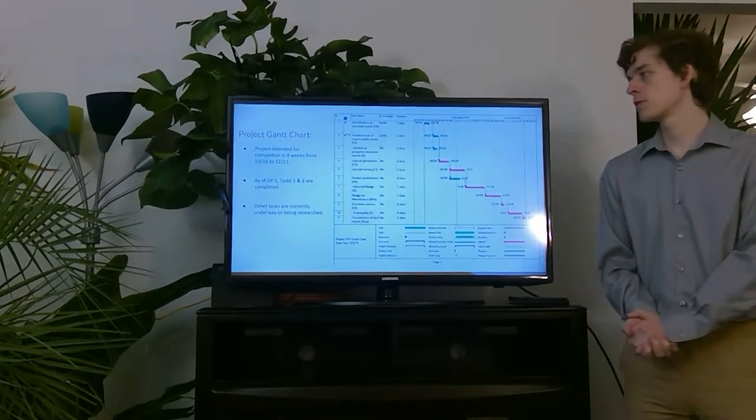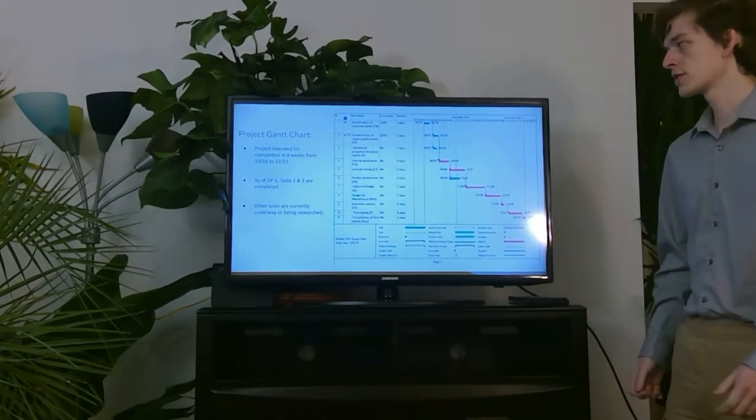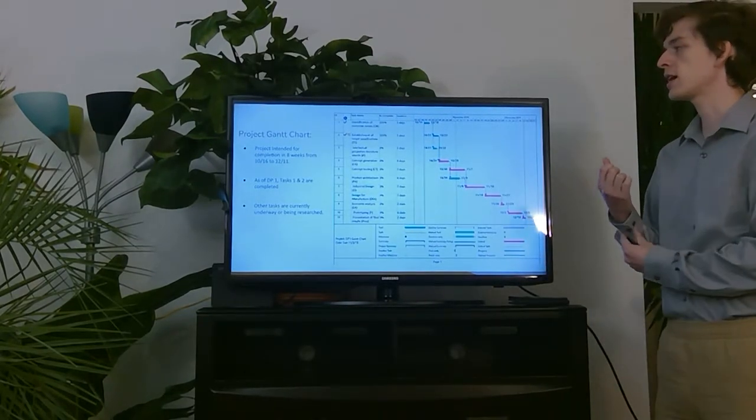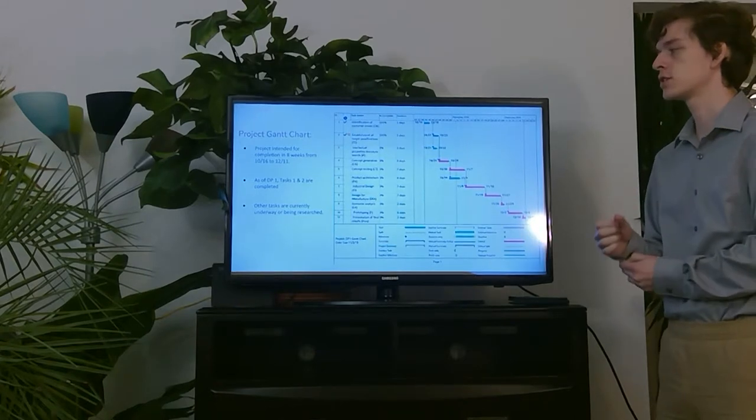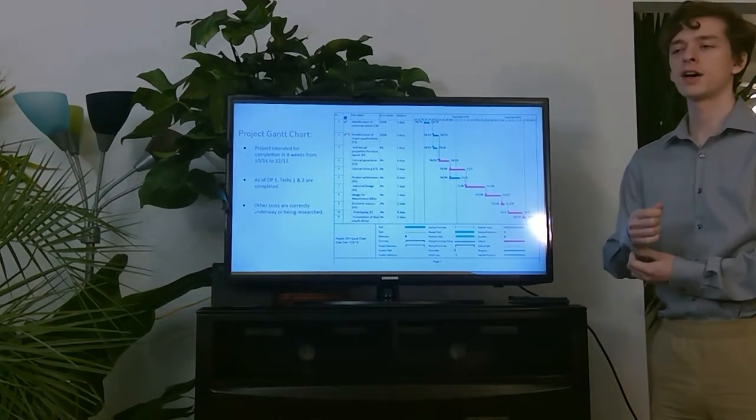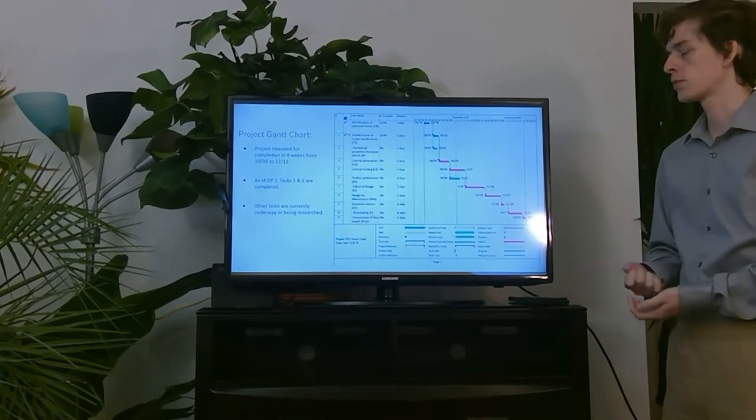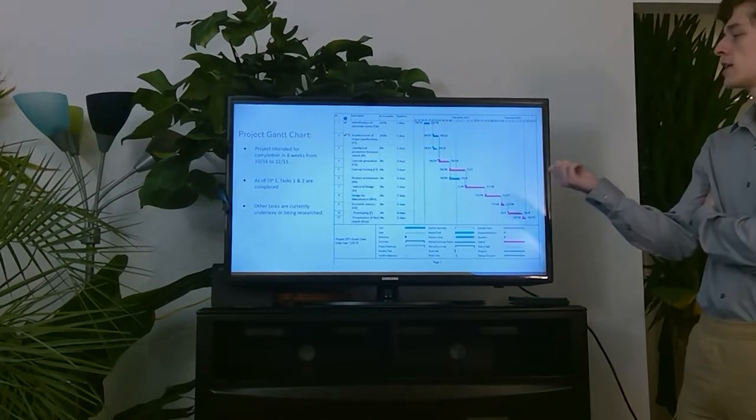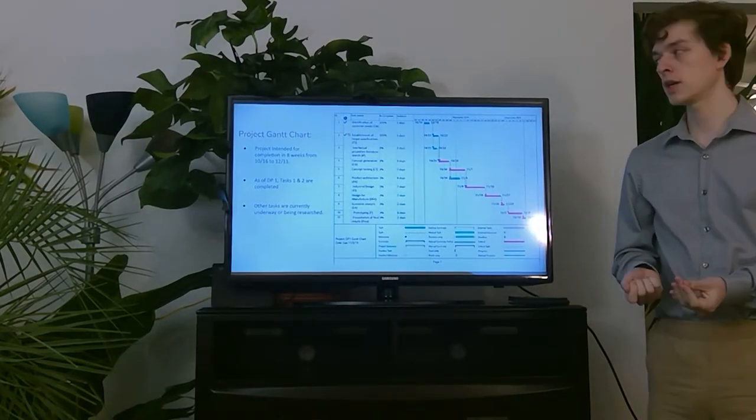For this project, we developed a project Gantt chart. The project is intended for completion within eight weeks from 10-16 to 12-11. As of our first design review of this DP1 proven task, tasks one and two have already been completed, that being identification of customer needs, as well as the establishment of target specifications.